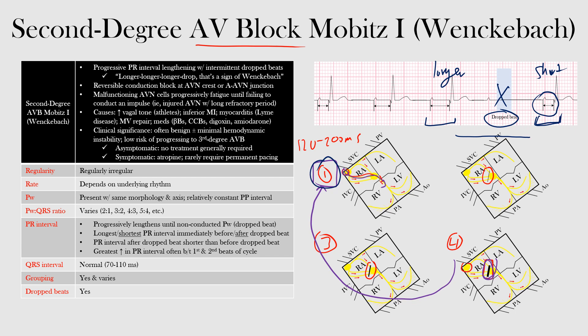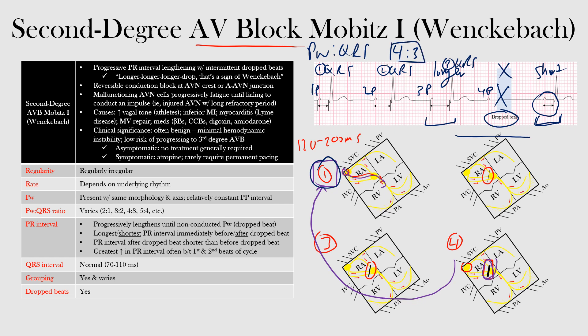This type of second-degree AV block can be further characterized by the number of P waves associated with each QRS complex. In our example, we would call this a four-to-three Wenckebach, meaning four P waves to three QRS complexes. We count four P waves total, and three QRS complexes — the fourth P wave has no corresponding QRS because of the dropped beat.